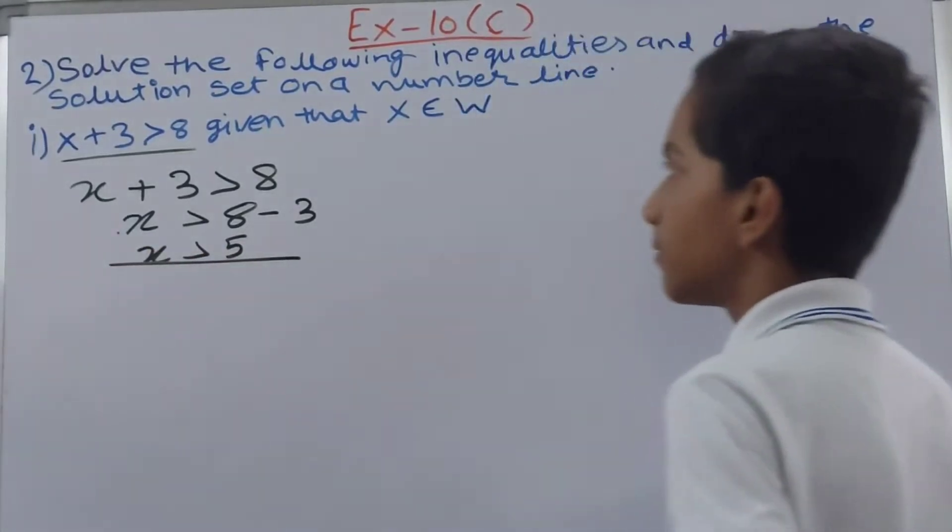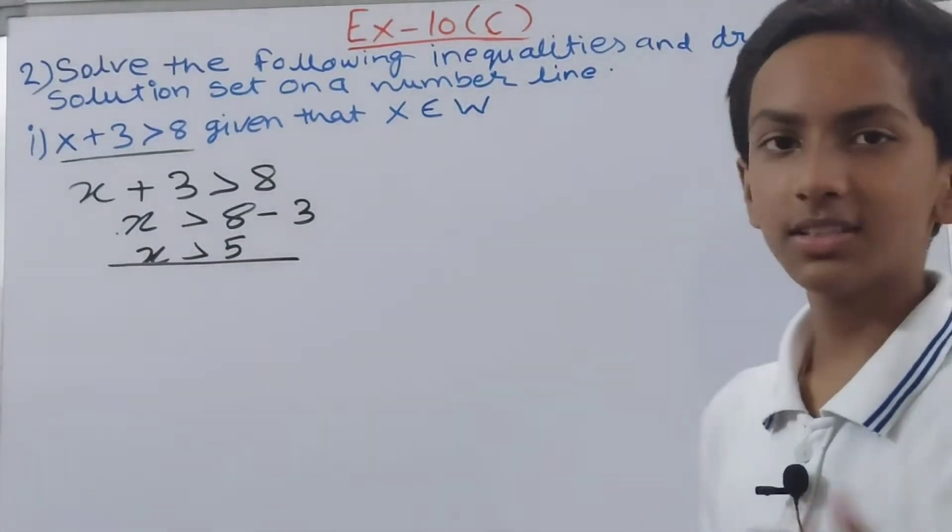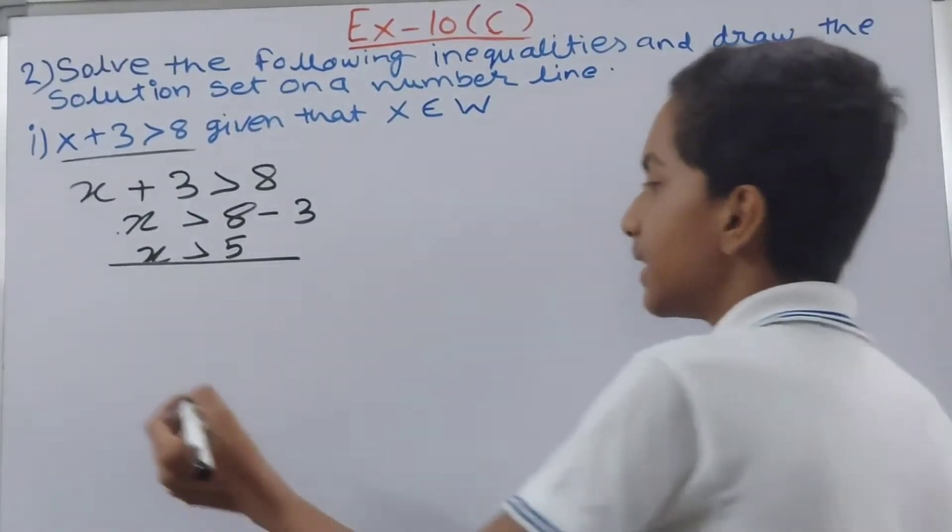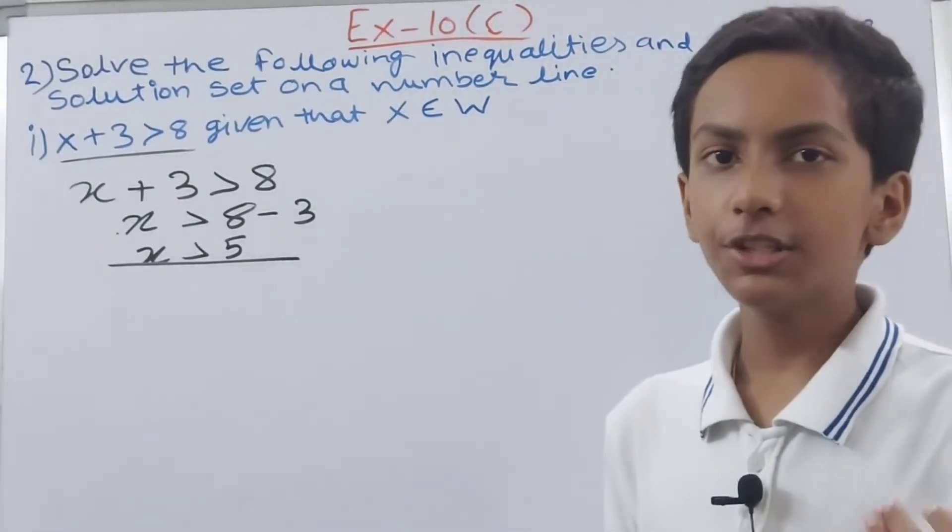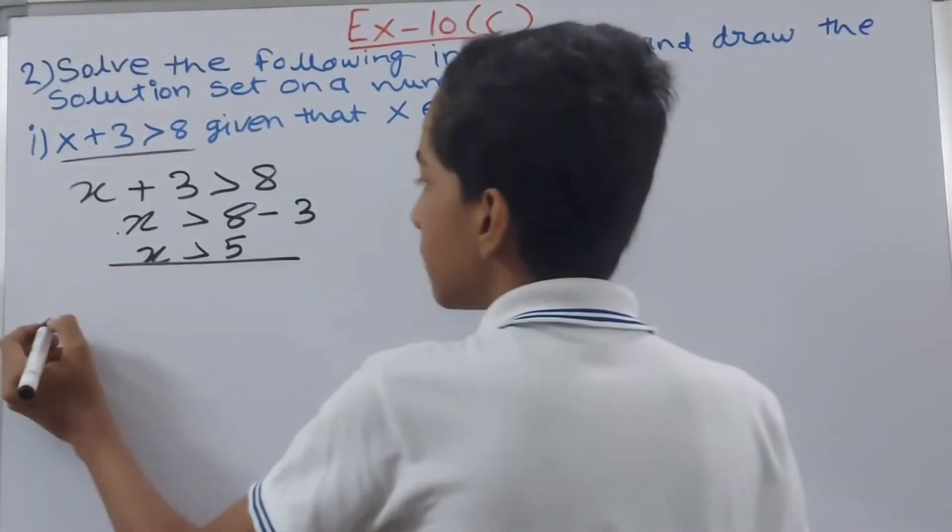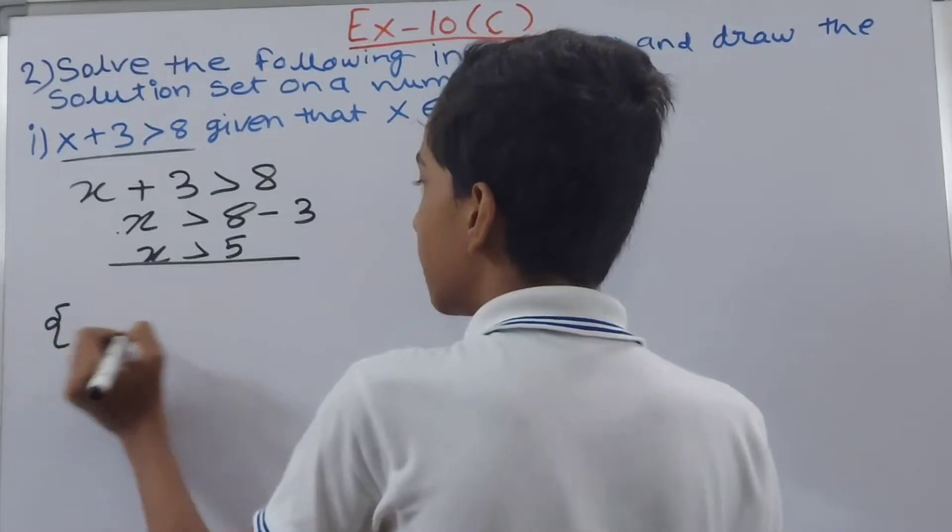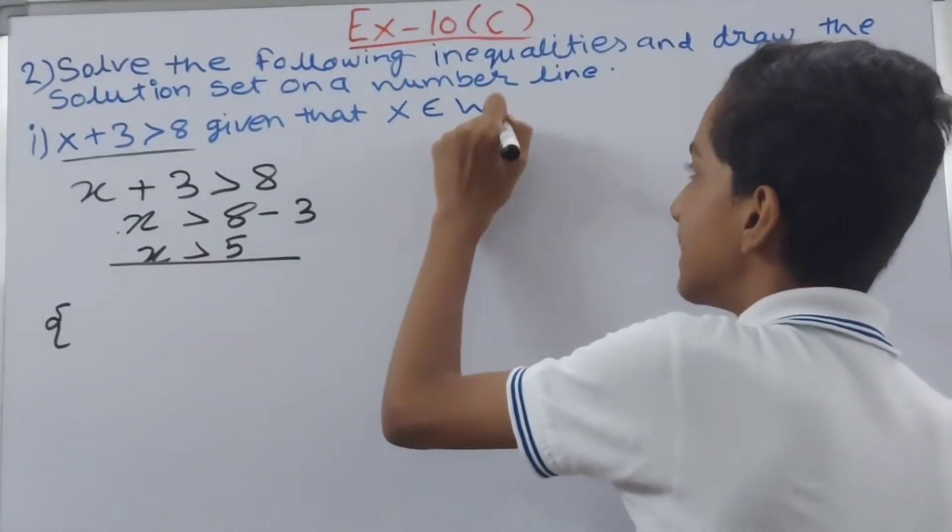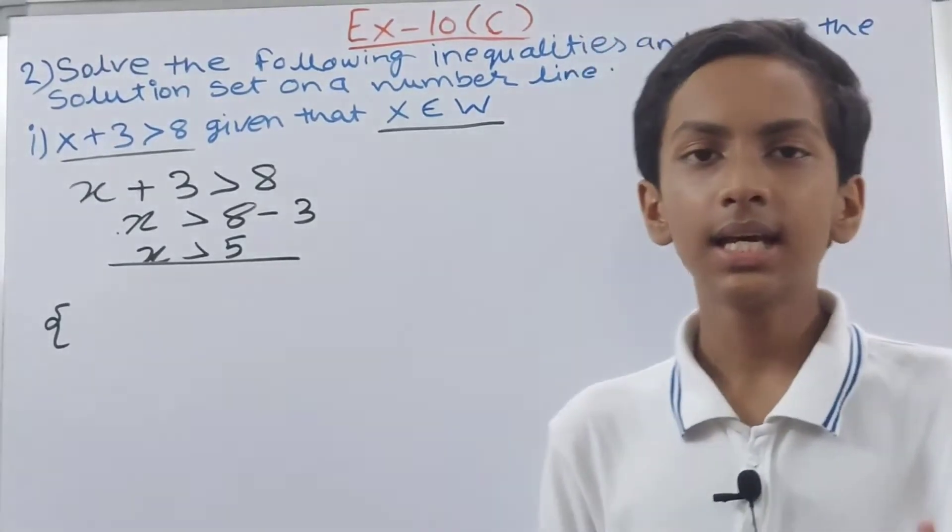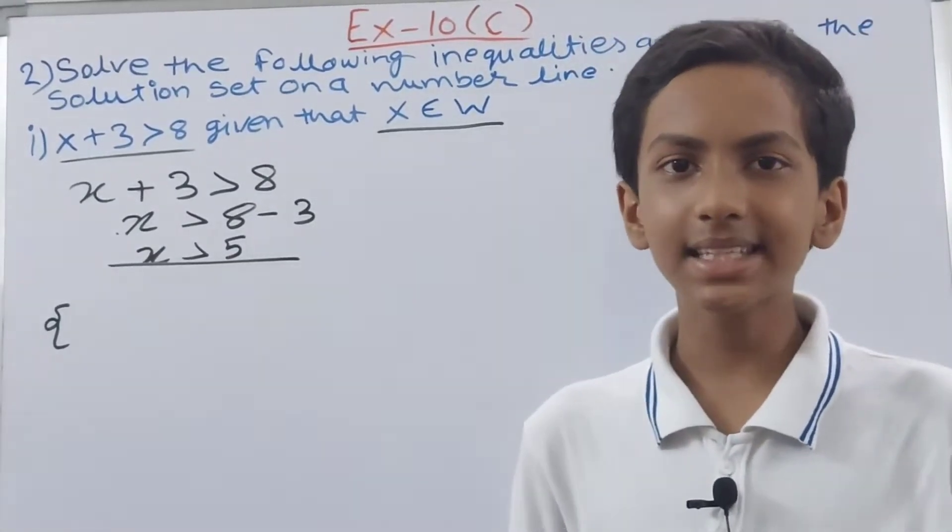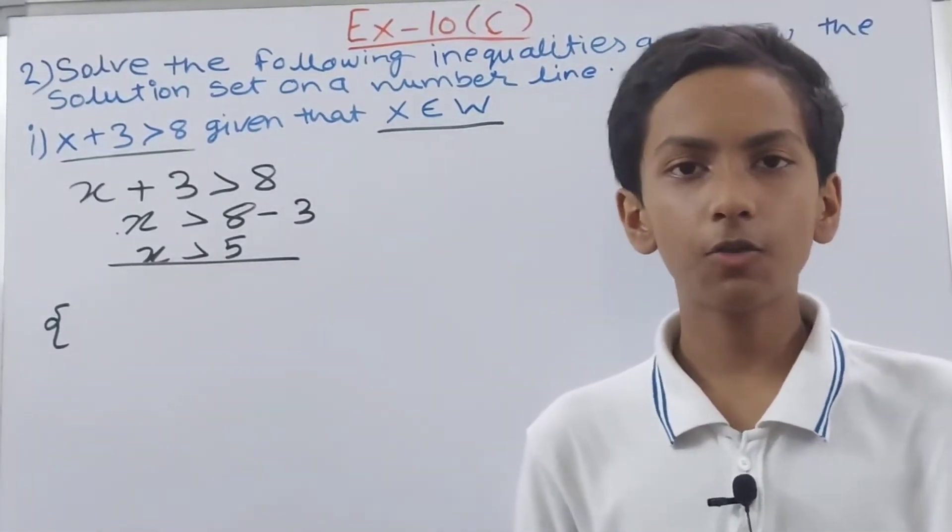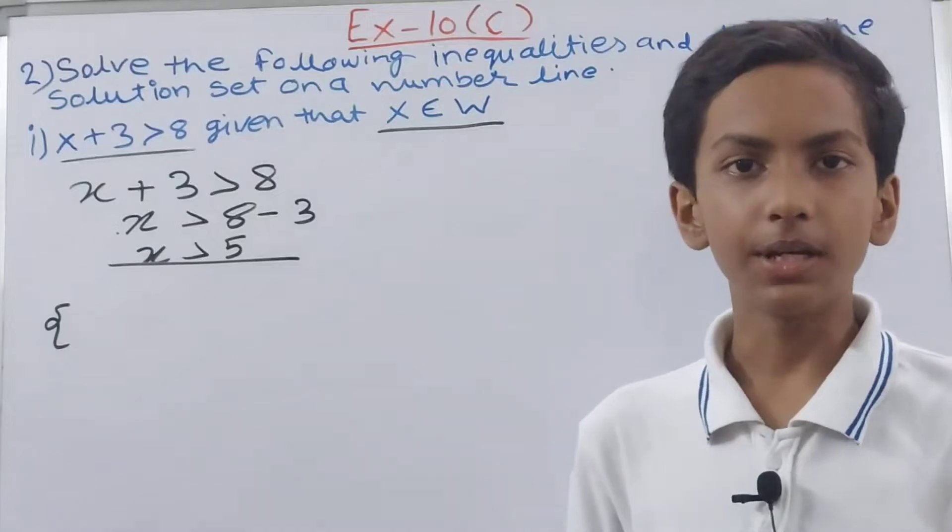This inequality we have solved. Now we have to write the solution set. What is that? Basically it is a set in which we write the values of x. So let us write. First of all we open the curly brackets. And here you see this one thing is given: x belongs to whole numbers. This means that value of x can be whole numbers only. And whole numbers are those numbers which start from 0 and go till infinity.